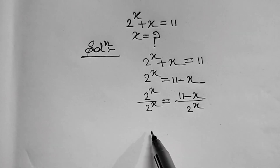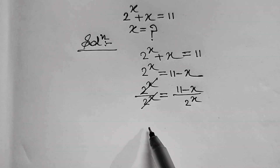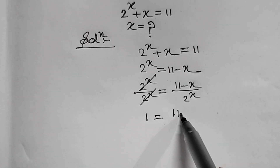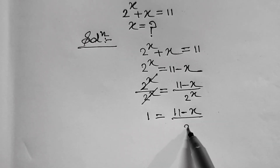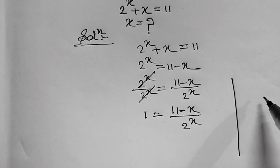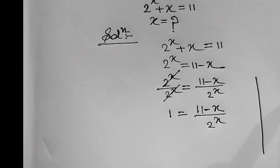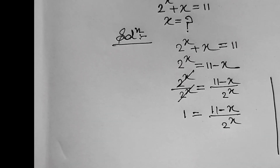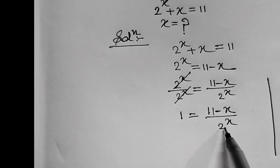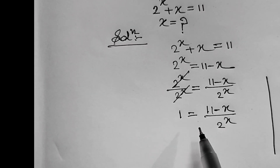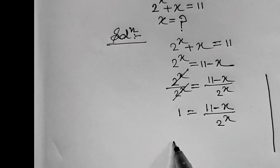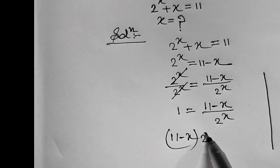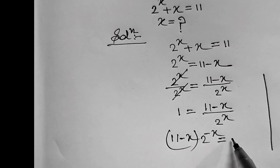This 2 to the power x and 2 to the power x will be cancelled. Therefore, 1 equal to 11 minus x upon 2 to the power x. Now, since we know the formula a to the power minus n equal to 1 upon a to the power n. Therefore, 1 upon 2 to the power x can be written as 2 to the power minus x. Then, the above equation can be written as 11 minus x times 2 to the power minus x equal to 1.